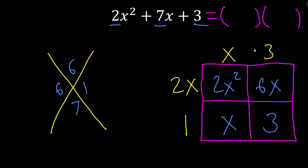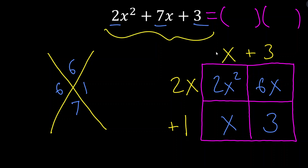And so now we have the factors: (2x + 1)(x + 3) = 2x² + 6x + x = 2x² + 7x + 3. Not only did we find the factors, but we literally proved through this model that those two factors multiplied together do in fact equal the original quadratic. Now let me show one alternate approach.